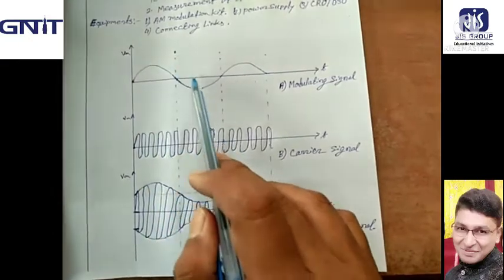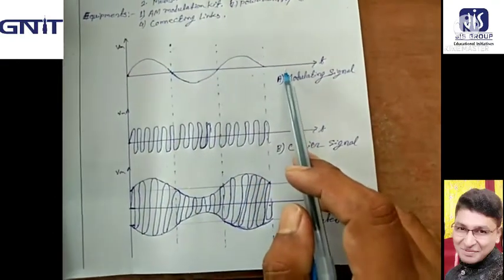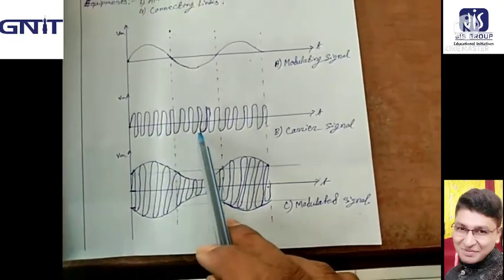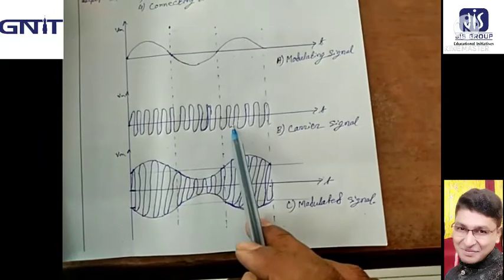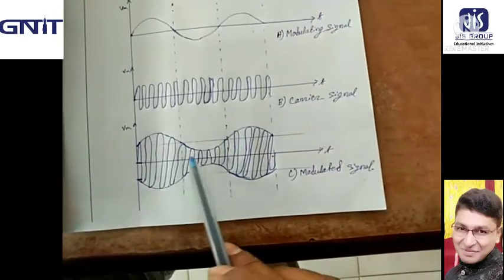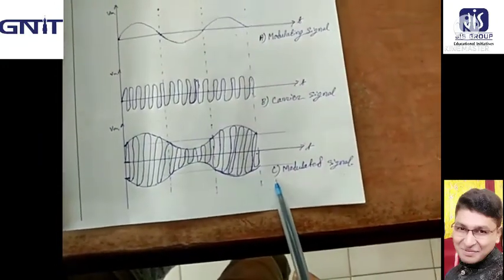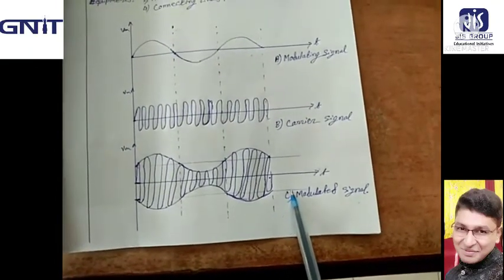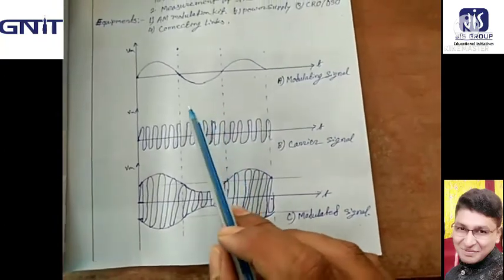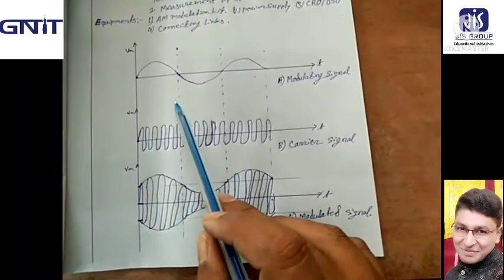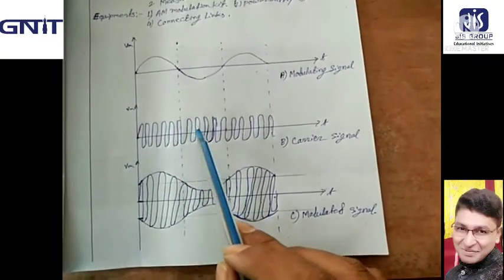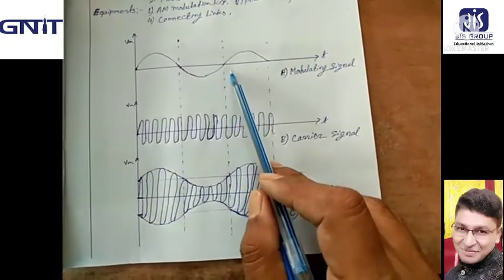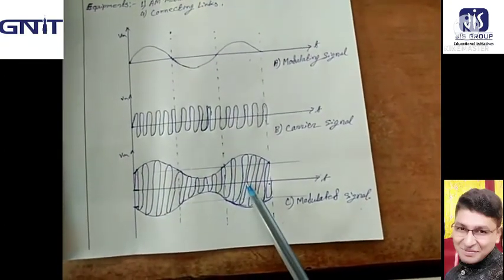This is our modulating signal or message signal. This is our carrier signal, and this is our modulated signal. In amplitude modulation, when the carrier signal amplitude varies according to the message signal, it is called amplitude modulation.